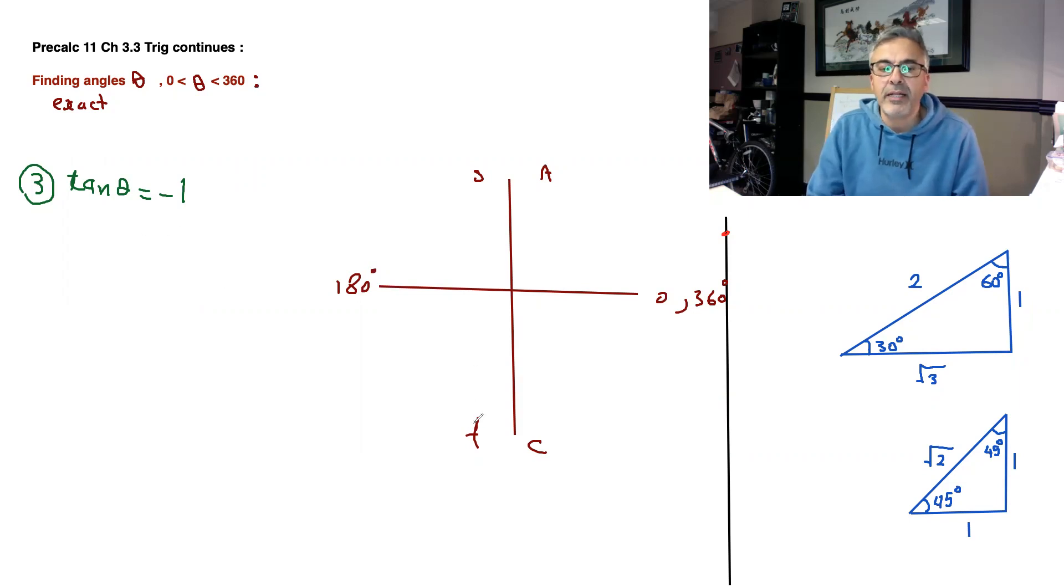So tan is negative, definitely not here, because the tan is positive, and definitely not here, so you're in this quadrant and the second and the fourth. Okay, just as a reminder, these are how the sides are called: 1, 2, 3, 4.